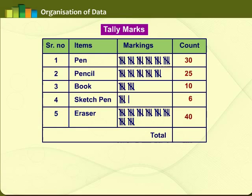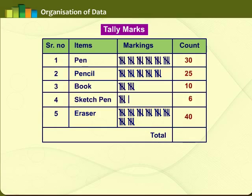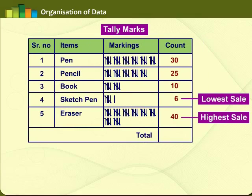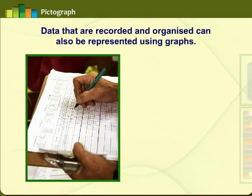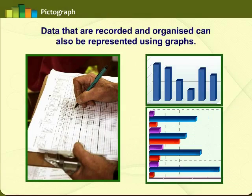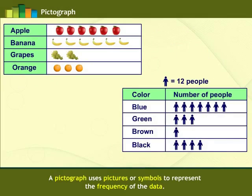By using tally marks, one can evaluate more information. For example, if the shopkeeper wants to know the total number of pencils and erasers sold, he can easily calculate by adding the count of each. He can also evaluate the highest or lowest number of items sold just by observing the table. Data that are recorded and organized can also be represented using graphs.